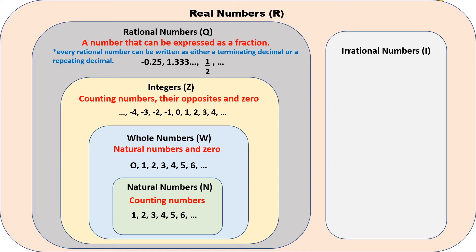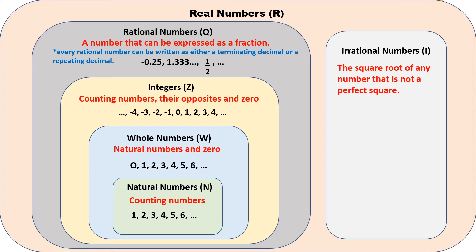Now let's move on to irrational numbers, or I. These are the square root of any number that is not a perfect square — a decimal that does not terminate or repeat. Examples of irrational numbers: the square root of 2, because 2 is not a perfect square; pi; and the square root of 11.